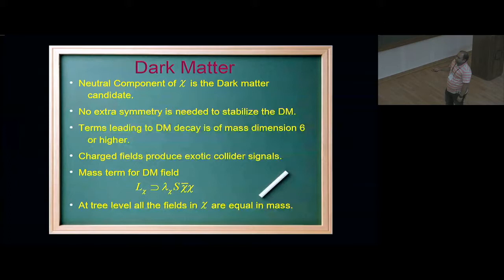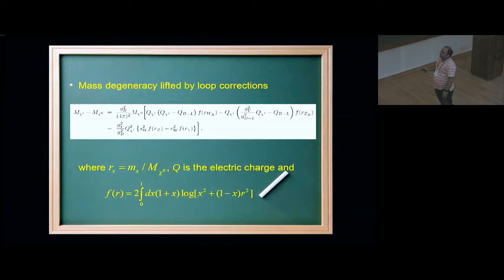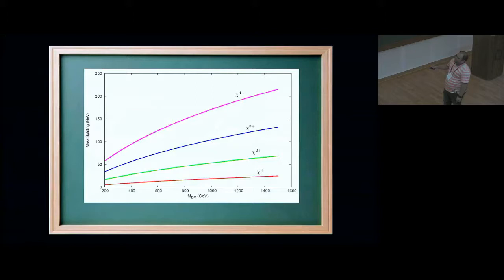The mass term for the dark matter comes from its coupling with the singlet field, so it's this lambda chi times S chi bar chi. When S gets a non-zero vev, the lambda chi times VS will give the mass for all the fields. Since this is one single term, all these chi fields, the five of them, are getting a mass which is degenerate. But the degeneracy is actually lifted at the one-loop level through W and Z and photon loops. This is a plot of these mass differences as a function of the dark matter mass. So on the x-axis we have the dark matter mass. Chi plus is the mass difference of chi plus with chi zero, similarly for chi two, chi three, chi four.